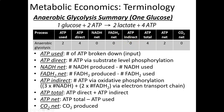ATP indirect is how much ATP you get through oxidative phosphorylation — basically, from NADH and FADH2 in the electron transport chain. NADH has an energy equivalent of three ATP, and FADH2 has an energy equivalent of two ATP. You multiply NADH net by three, add FADH2 net multiplied by two, and that gives your ATP indirect. For anaerobic glycolysis, we have no NADH and no FADH2, so ATP indirect is zero.